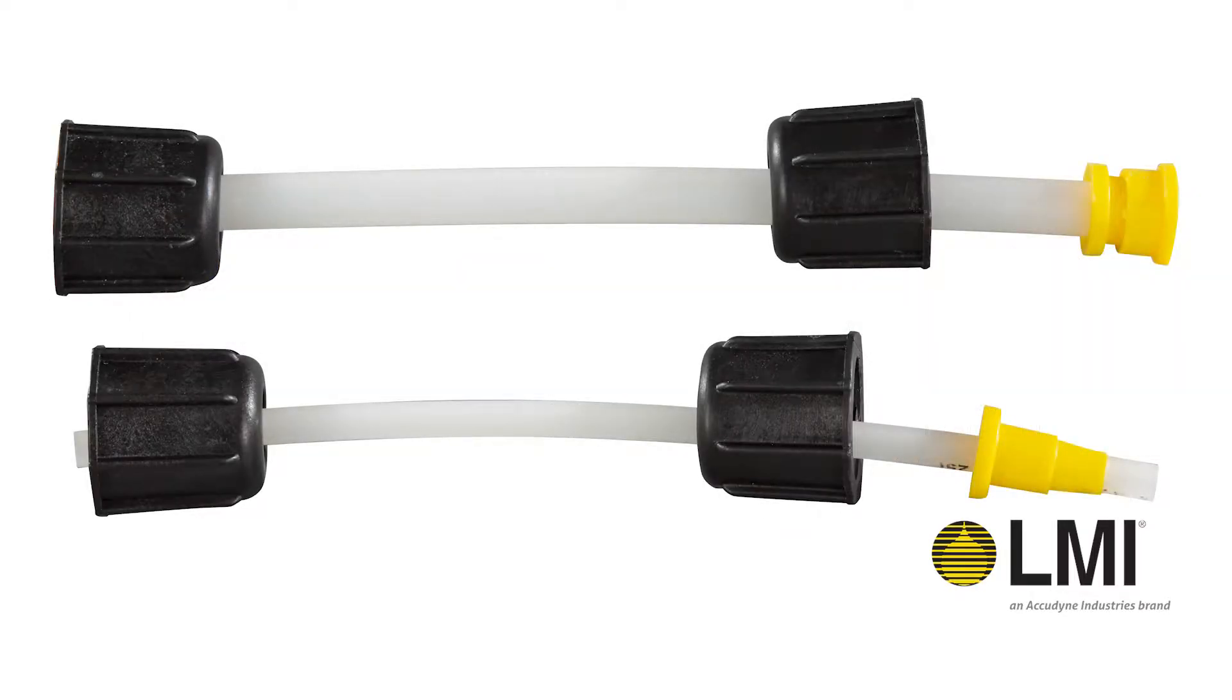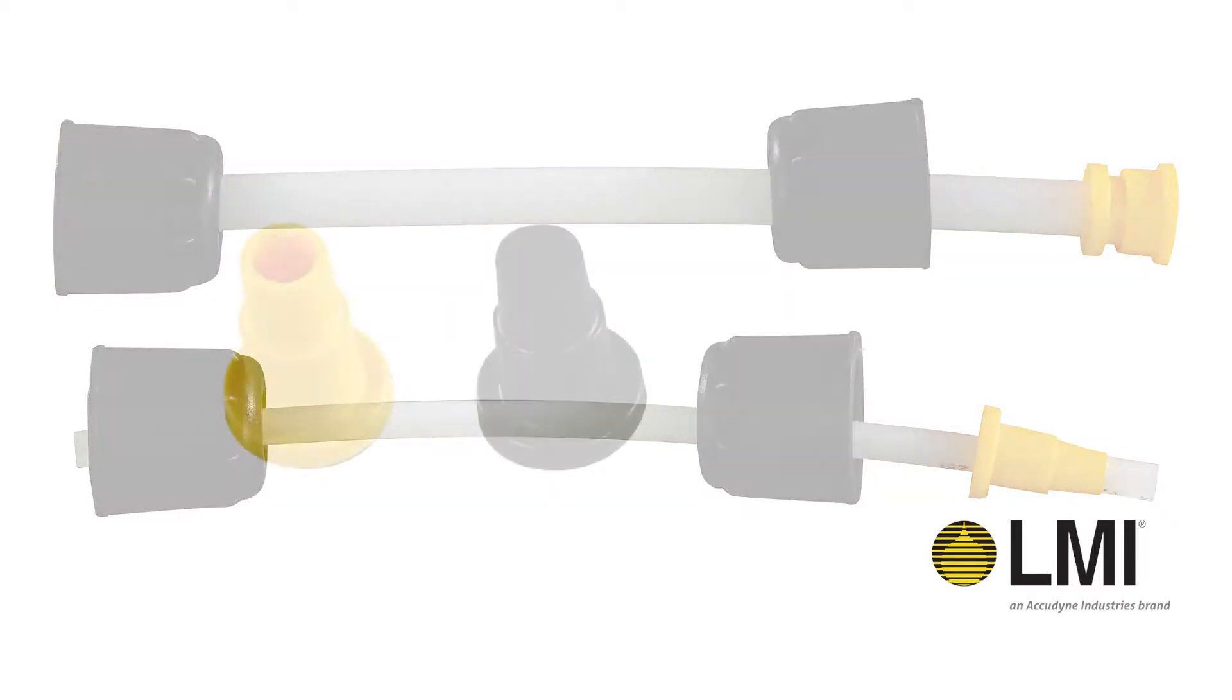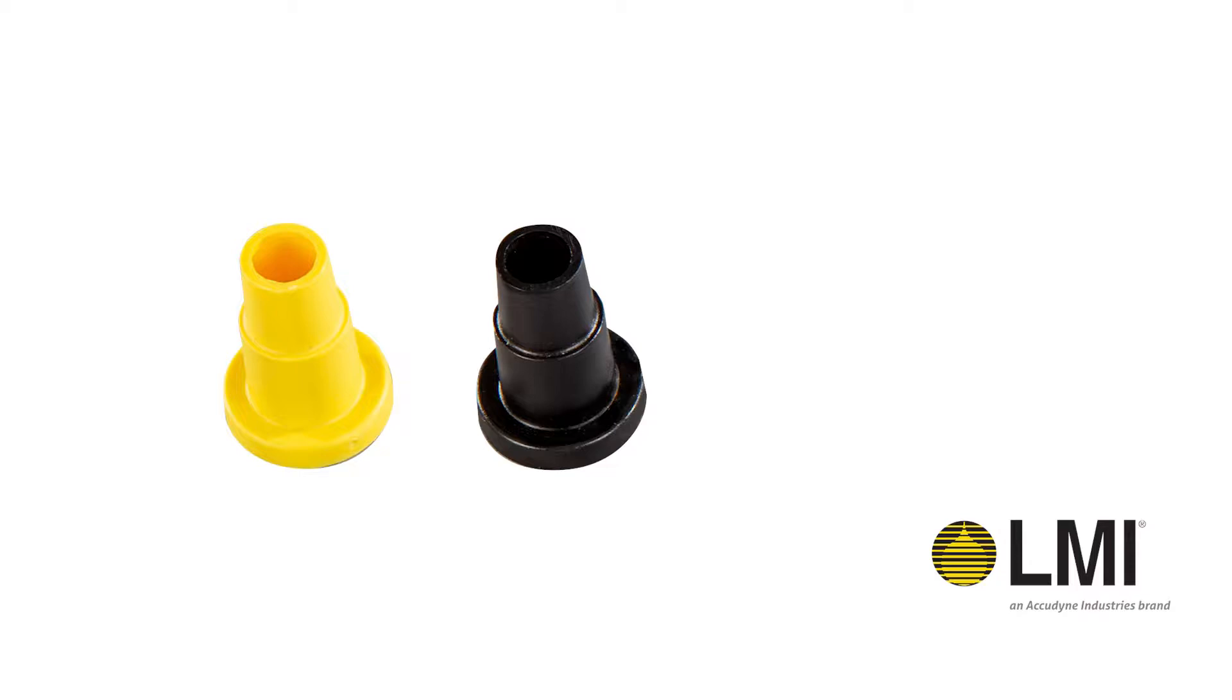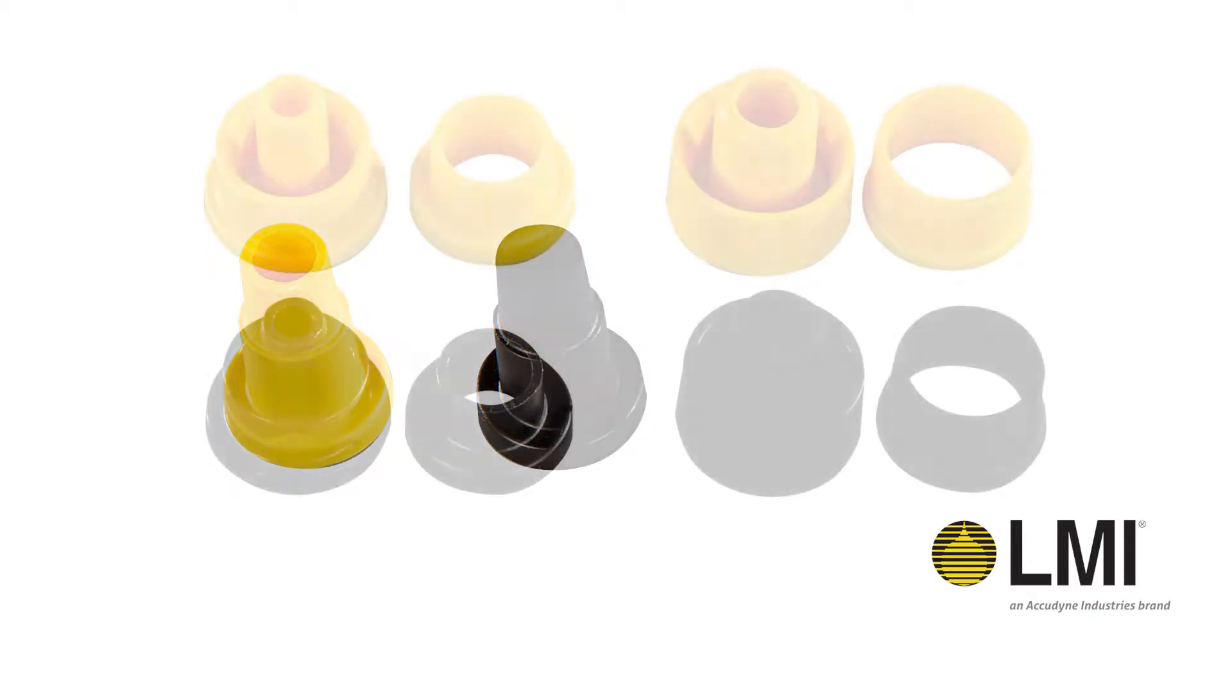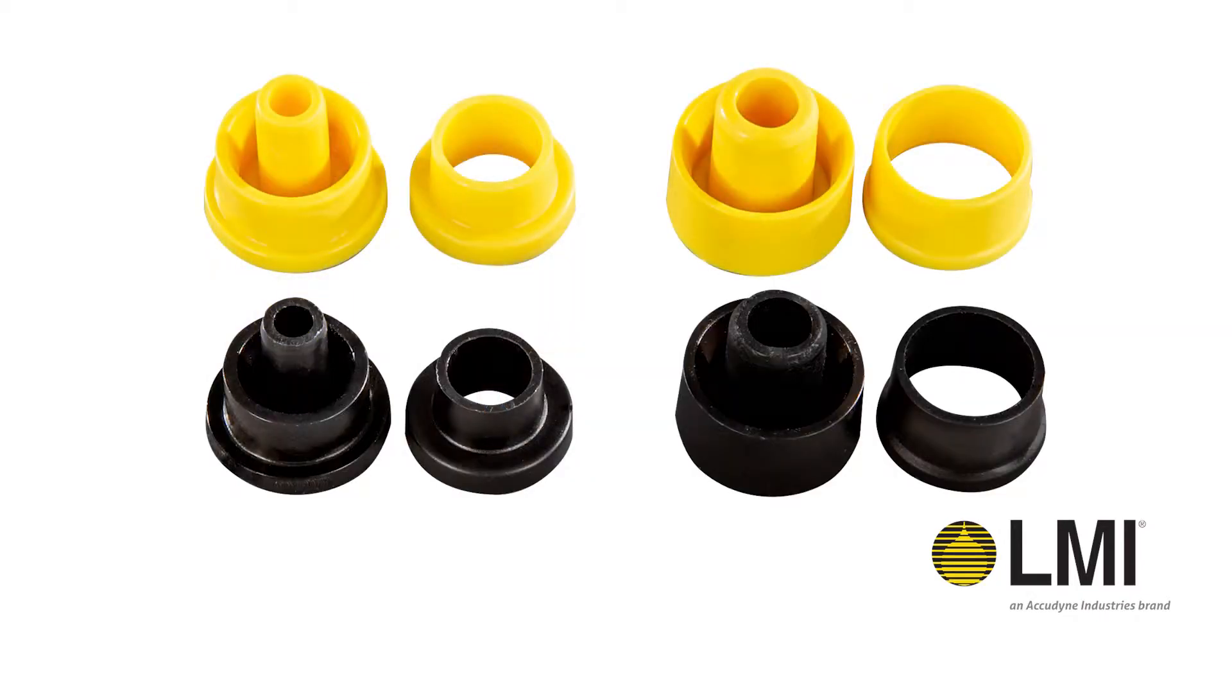This video will show you how to properly assemble LMI tubing onto a fitting. Smaller ¼ inch and 6mm tubing use a single ferrule for connection, while medium ¾ inch or 8mm and larger ½ inch or 12mm tubing use a two ferrule design.